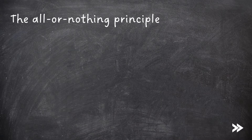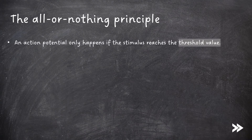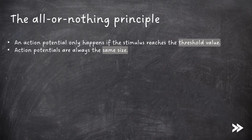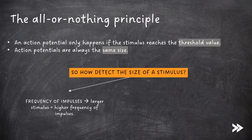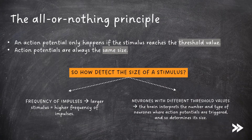We also need to know about something called the all-or-nothing principle. This is the concept that an action potential only happens if the stimulus reaches a threshold value. Action potentials are also always the same size. So how do we therefore detect the size of a stimulus? This can be done in two ways: first of all by the frequency of impulses — if there is a larger stimulus, there is a higher frequency of impulses. Also, it can be done by having neurons with different threshold values. The brain interprets the number and type of neurons where action potentials are triggered, and so determines its size.